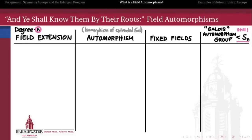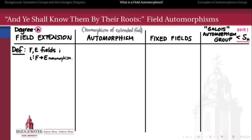Let's lay the groundwork with some definitions. A field extension has a base field f and an extended field e, with some monomorphism — a one-to-one homomorphism of fields — from f into e, realizing the image of f as a subfield inside e. An automorphism is first and foremost a function from a field to itself — phi from e to e, where e is our extended field — but it also has specific properties.